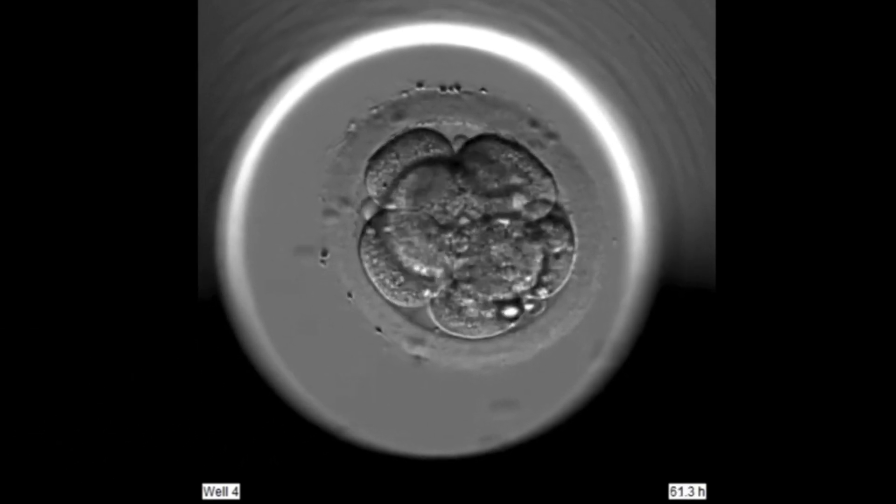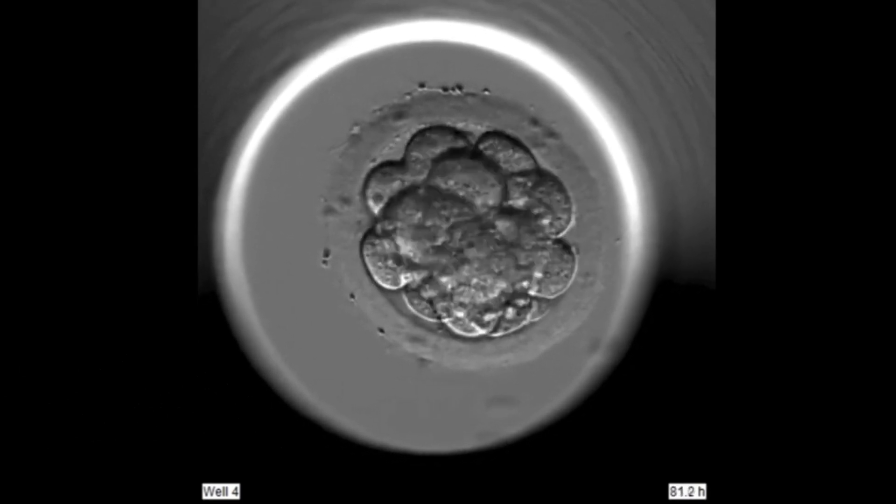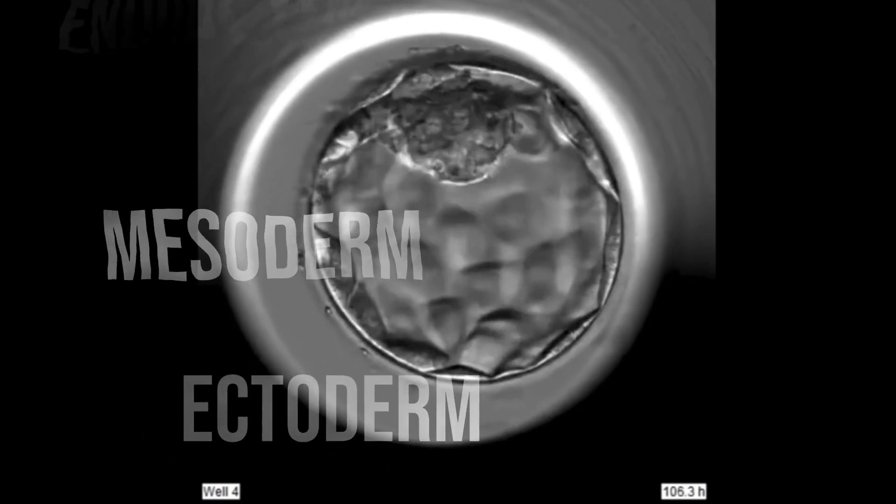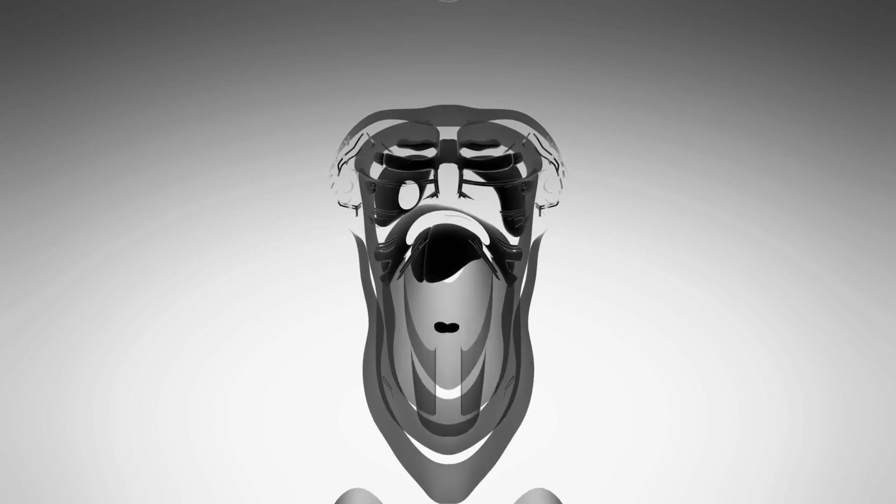These cells inside the blastocyst continue to differentiate and form three main types of cells called germ layers, labeled endoderm, mesoderm, and ectoderm. After this stage, more dramatic differentiation and structural changes happen, ending with a fully formed human baby.